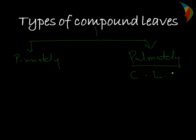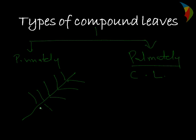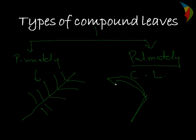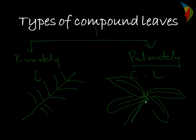Pinnately compound leaves means the leaves are arranged on either side of the rachis. This rachis forms the pinnately compound leaf. In the case of palmately compound leaves, leaves arise from the tip of the rachis from a common point. So there are two types of compound leaves.